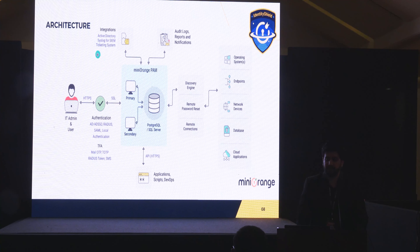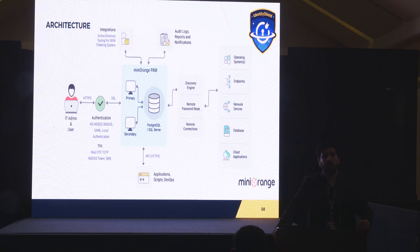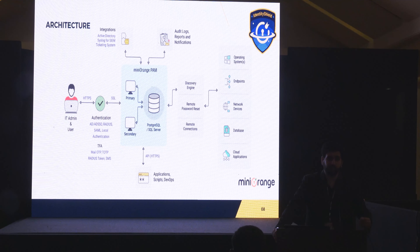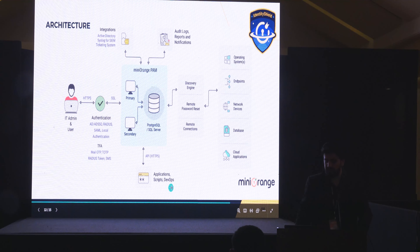If you want to automate the whole DevOps workflow — creating a machine, allocating it to a specific user, and once the allocation is done, deleting that machine — right now all of that is manual. But with PAM, you can automate this as well. Machines will automatically be created for you, and once the machine use is done, that machine will be deleted. This is PAM's integration with scripts and DevOps automation.